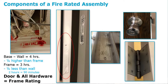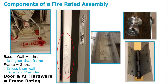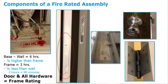Let's go back to the wall and start there. The wall is the base of every fire rated assembly and will often be rated for four hours or two hours. If I have a four-hour rated wall, the frame is going to be rated a quarter less — so a three-hour rated frame. From there, everything else is rated to match the frame: a three-hour rated door, three-hour rated hardware, including the locks, hinges, and closers. Everything else will match the frame.